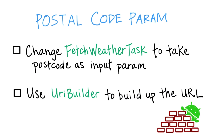We can declare a base URL and then append each pair of query param and param values onto it. This includes params for postcode, JSON format, metric units, and day count. This will make it easier in the future if we ever have to make these options configurable by the user.